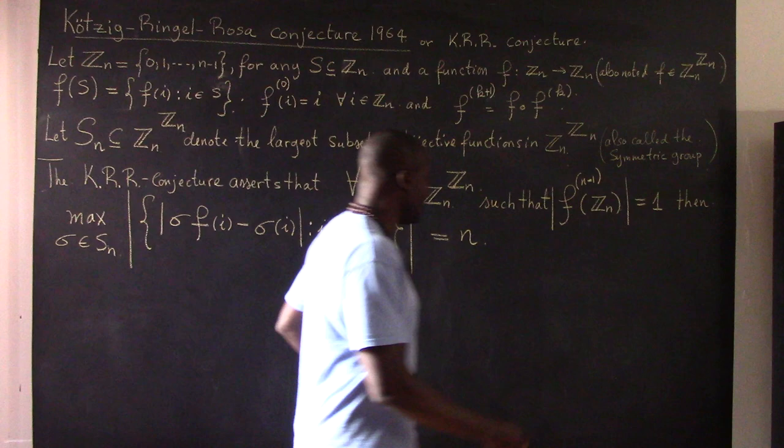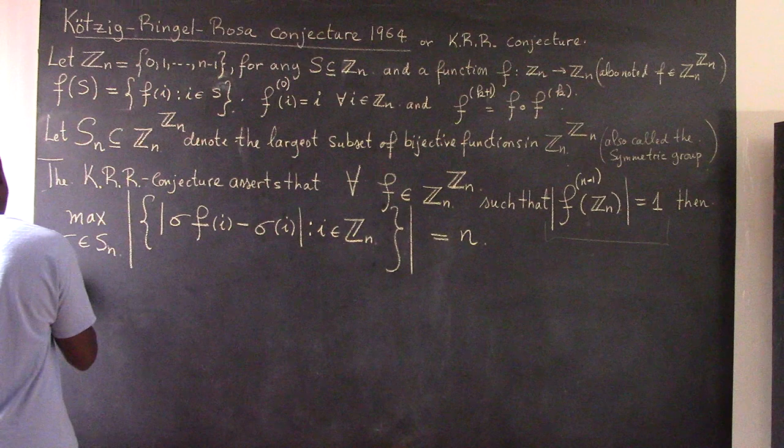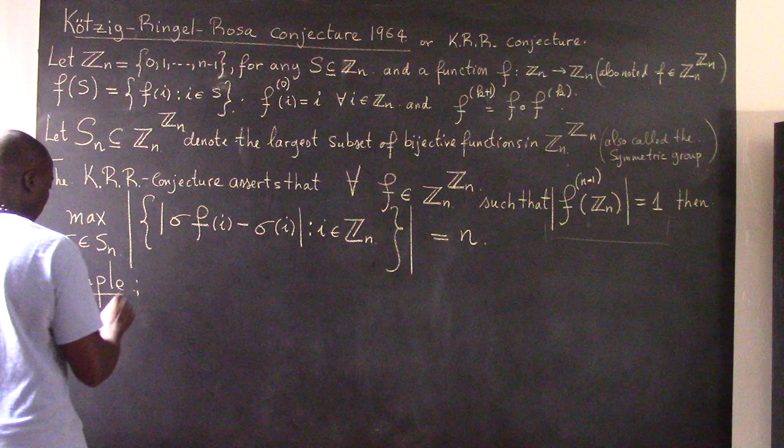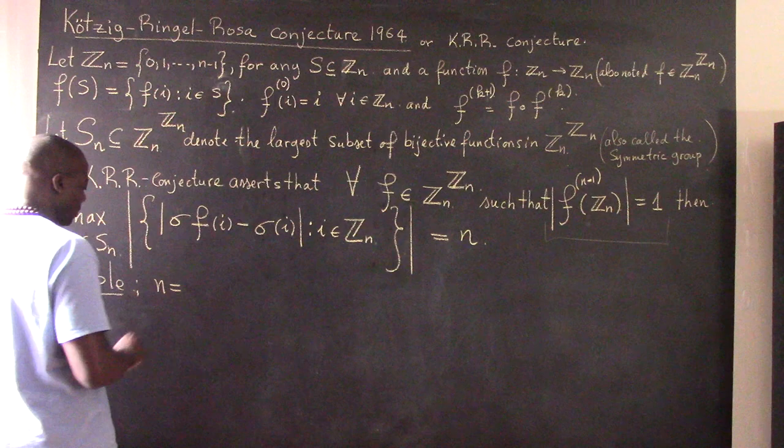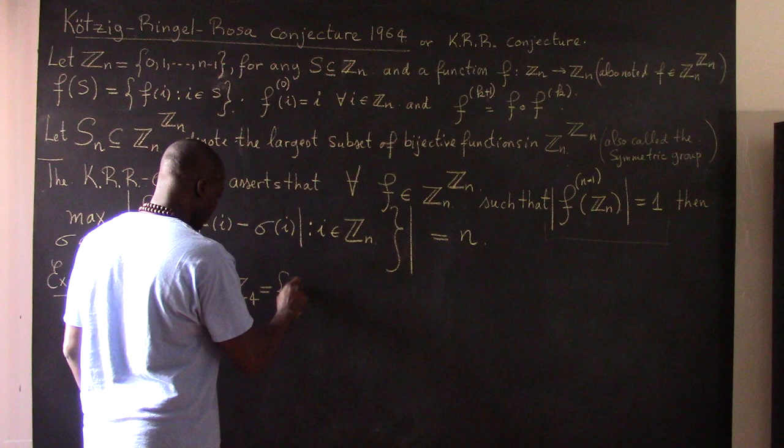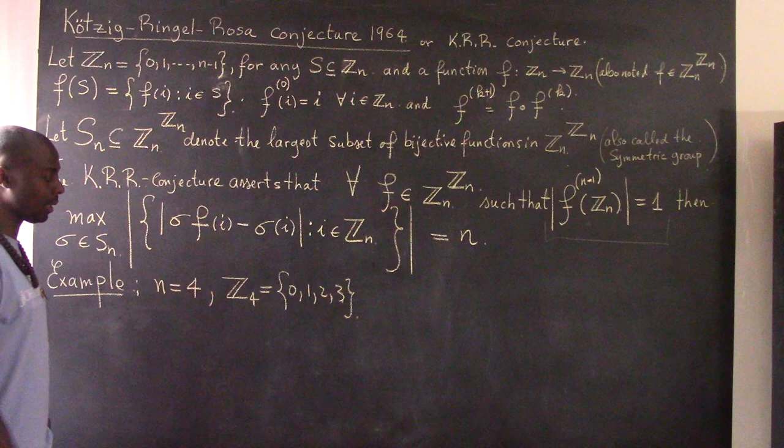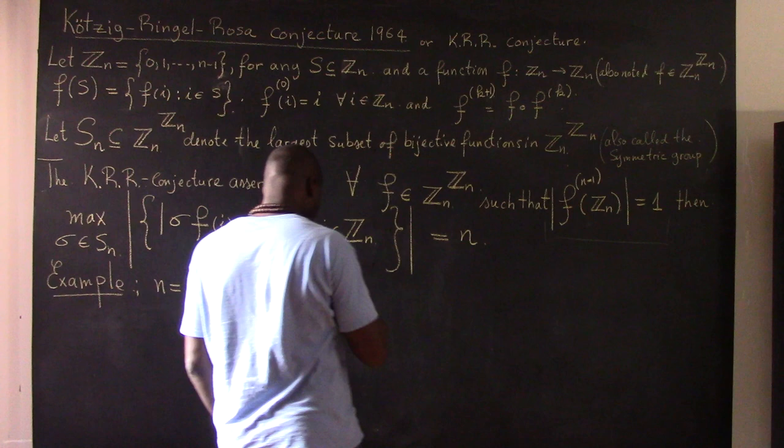So the KRR conjecture is a statement can be formulated as a statement about very special functions. These are functions which have the property that if you compose f with itself n minus 1 time, over the whole domain you get a single element. I will illustrate what this means in an example in a second. So to depict these functions, let's take an example. I want an example of a function which has this property. So I'm going to pick for the purposes of my example, n is equal to 4. So if I pick n is equal to 4, then Z_4 is going to be the set made of 0, 1, 2, and 3. 4 is not included because the set has exactly 4 elements. We're starting from 0.